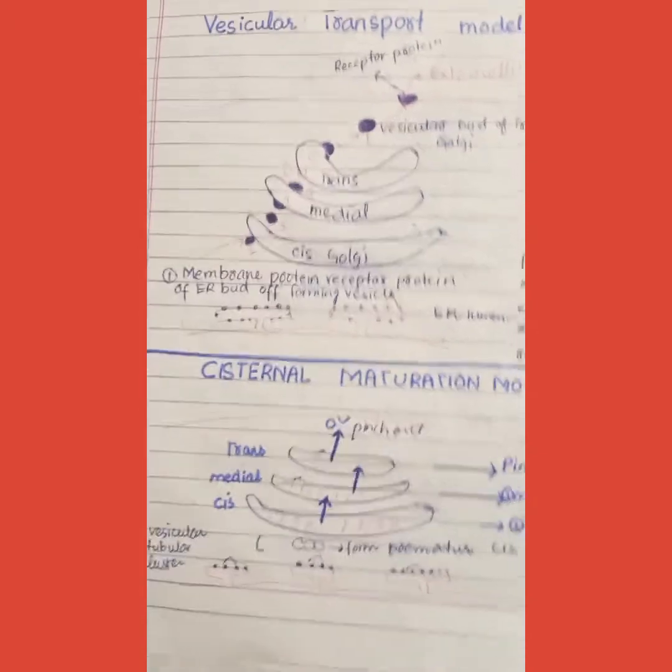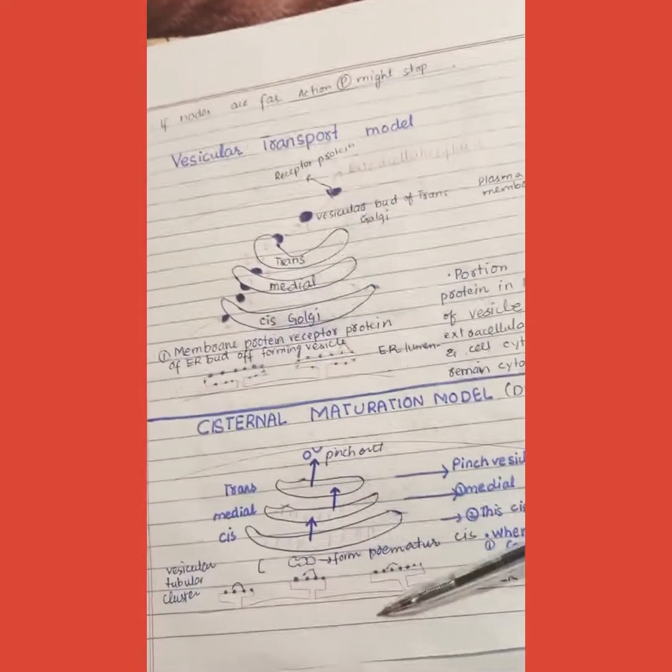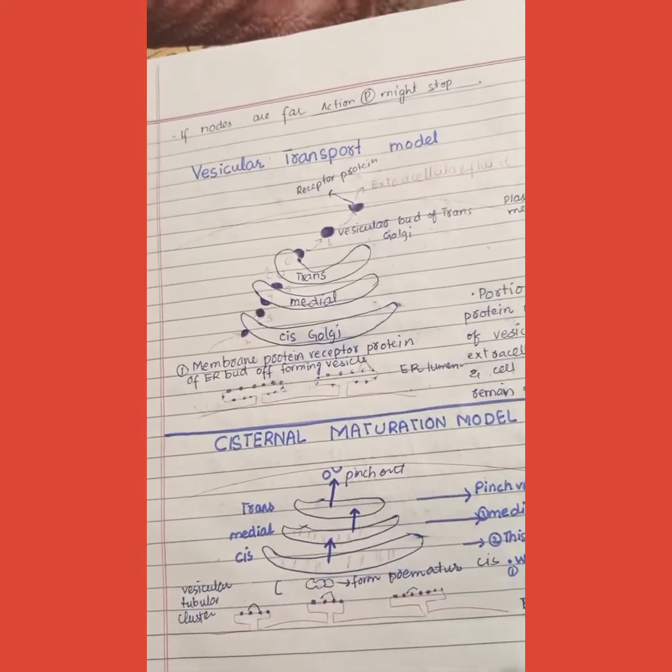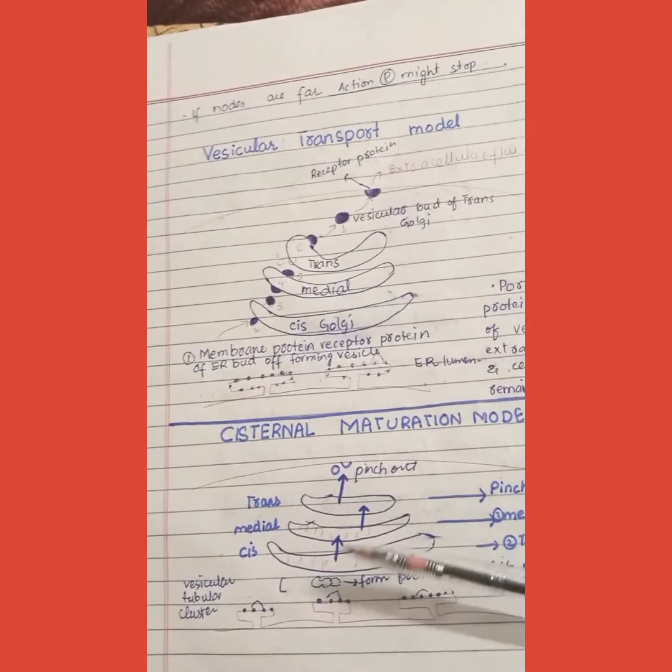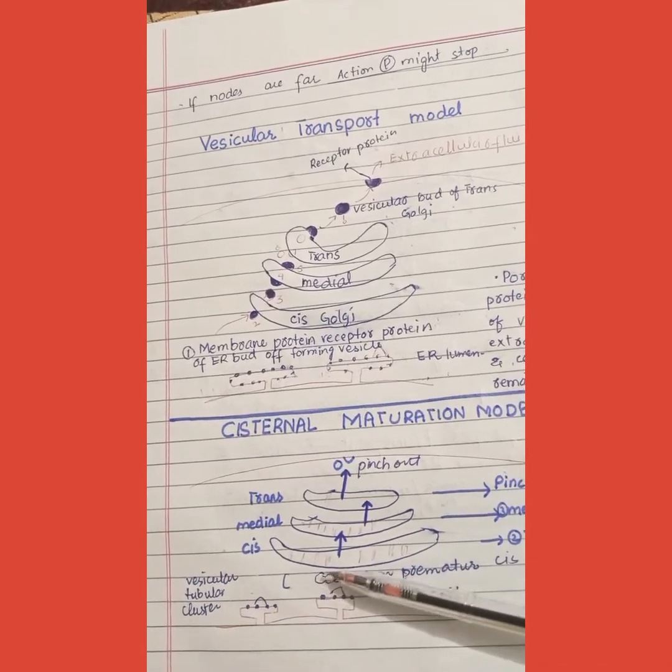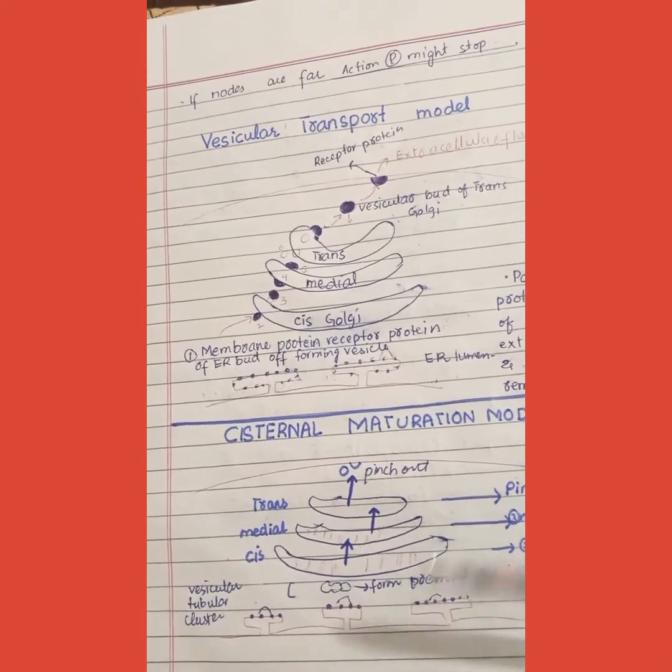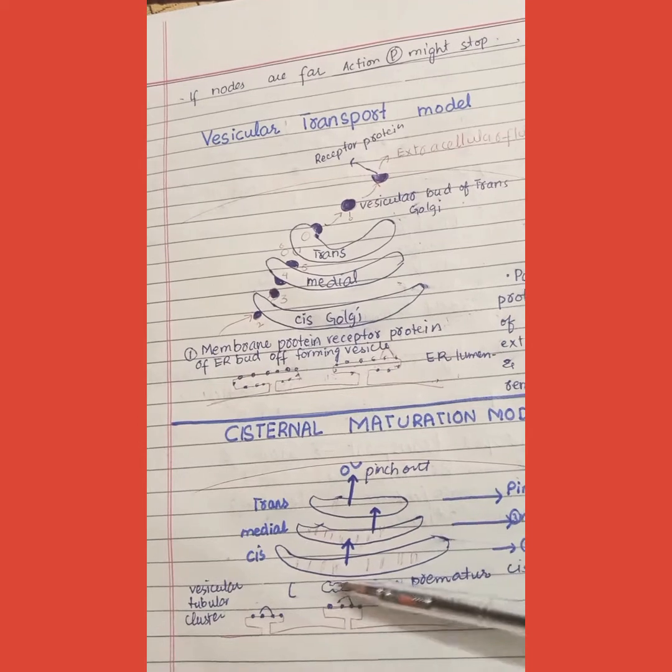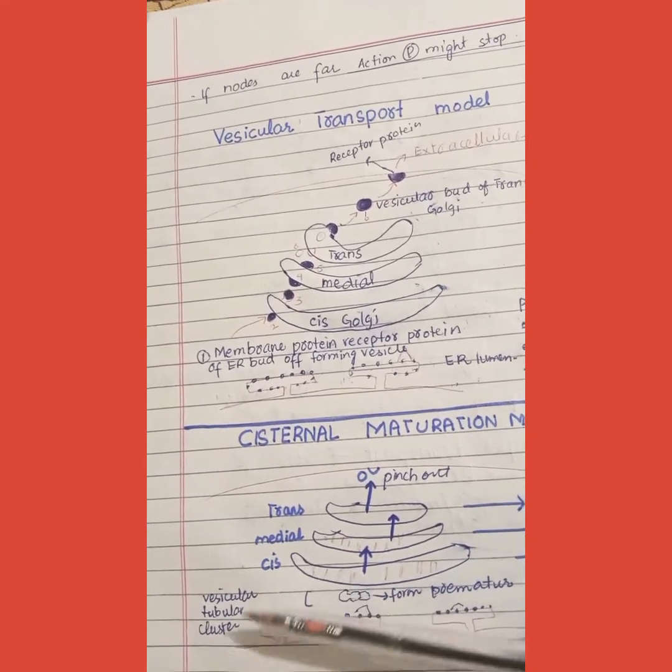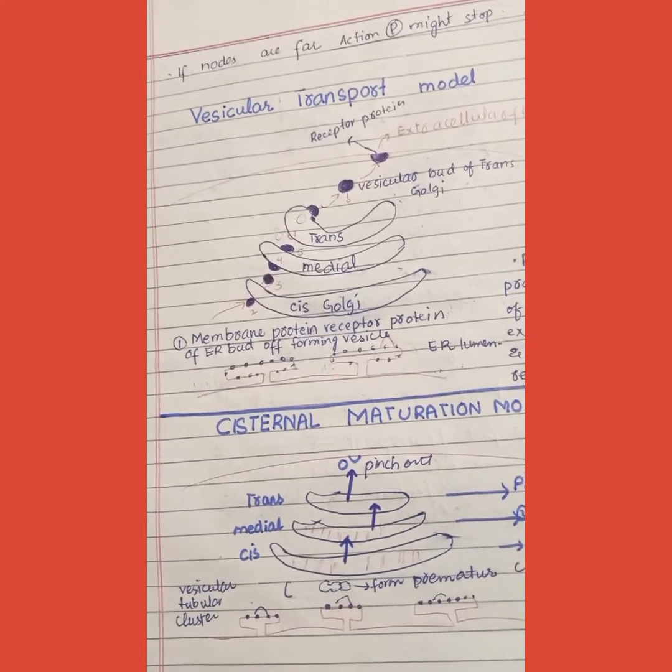The next one is the cisternal maturation model. This is very simple. When we find the endoplasmic reticulum, we form a vesicular tubular cluster. When it comes to a vesicular fuse out, it will form a premature cyst.